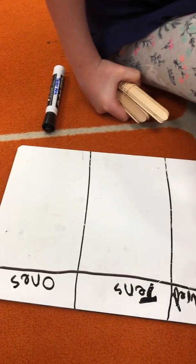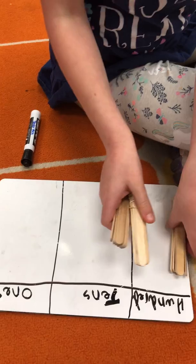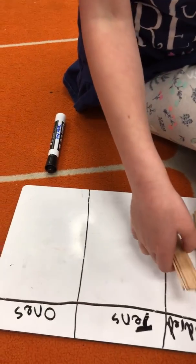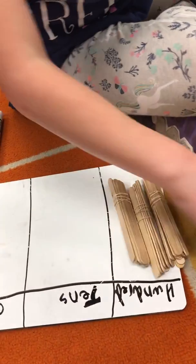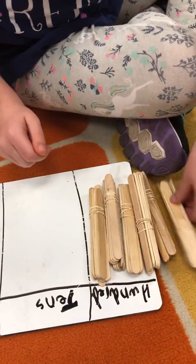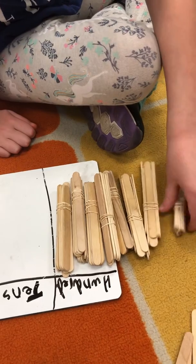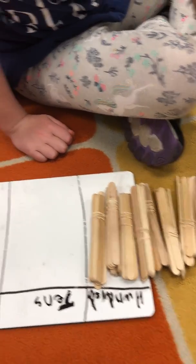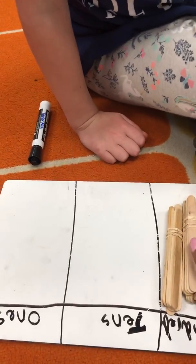So you would do how many right here? So ready? 10, 20, 30, 40, 50, 60, 70, 80, 90, 100. Okay, we have 100 right here.